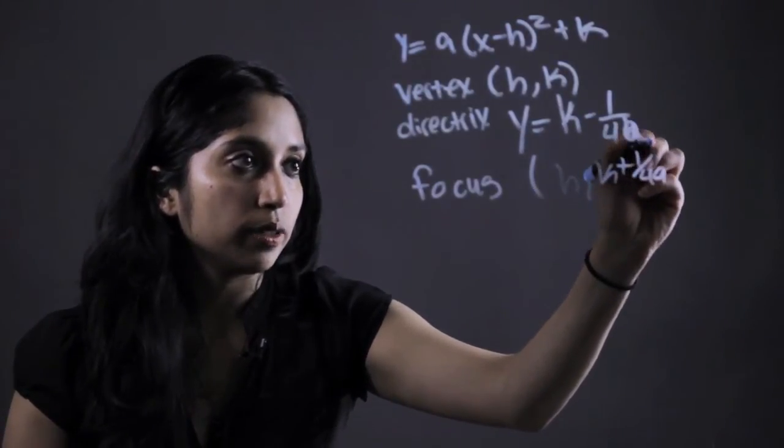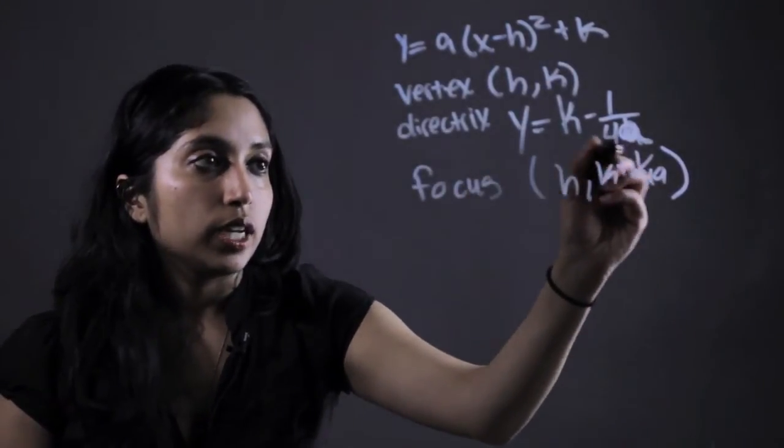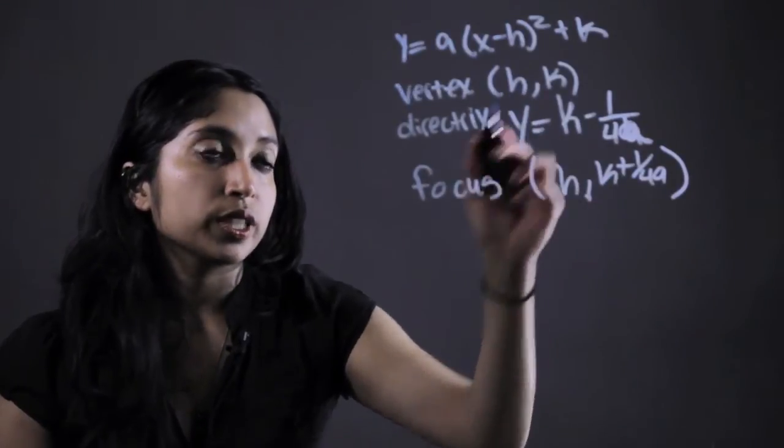Sorry, there should be an a right there. So this is our line, k minus 1 over 4a, h, k plus 1 over 4a, vertex of h, k.